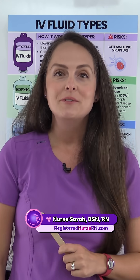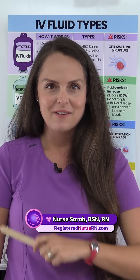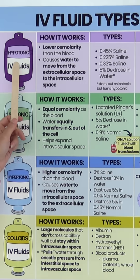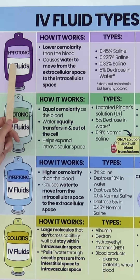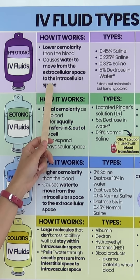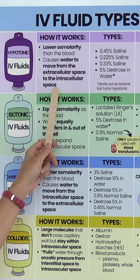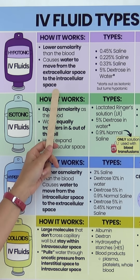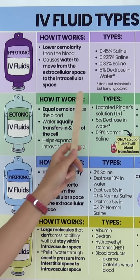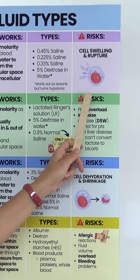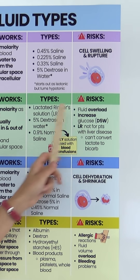Let's go over the four different fluid types you need to know as a nurse. First up are hypotonic IV fluids. Hypo means low, so these have a lower osmolarity than the blood. Therefore they're going to cause water to move from the extracellular space to the intracellular space. Here are the different types, and the risk includes cell swelling and rupture.